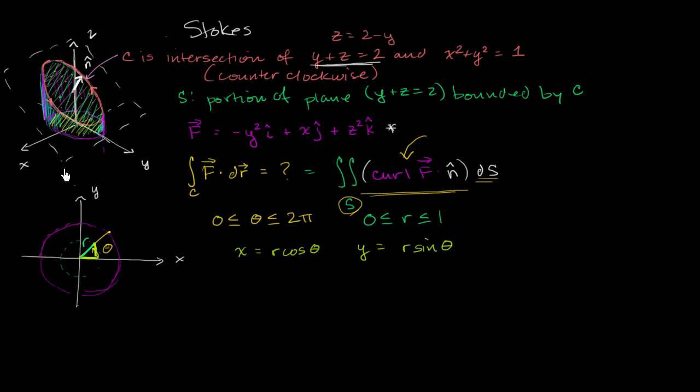That'll tell us how high to go so that we end up on that plane. So if z is equal to 2 minus y, and if y is r sine theta, we can rewrite z as being equal to 2 minus r sine theta. So there we're done.